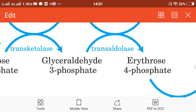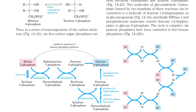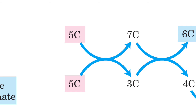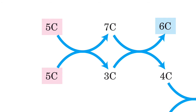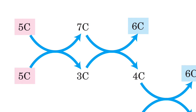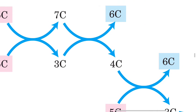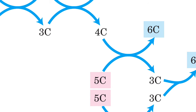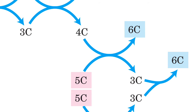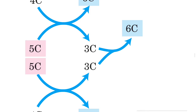To continue: 5-carbon ribose-5-phosphate and 5-carbon xylulose-5-phosphate react to form 7-carbon sedoheptulose-7-phosphate and 3-carbon glyceraldehyde-3-phosphate. These 7- and 3-carbon compounds combine (10 carbons total) to produce 6-carbon fructose-6-phosphate and 4-carbon erythrose-4-phosphate. Fructose-6-phosphate can form glucose-6-phosphate; erythrose-4-phosphate combines with xylulose-5-phosphate via transketolase to form glyceraldehyde-3-phosphate and fructose-6-phosphate, which can further yield glucose-6-phosphate.